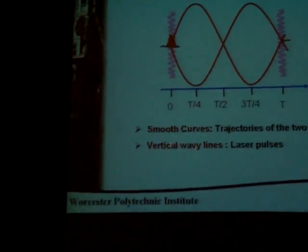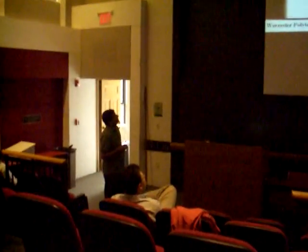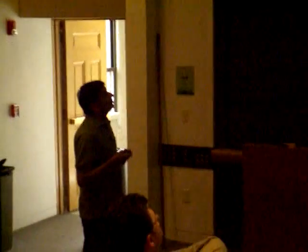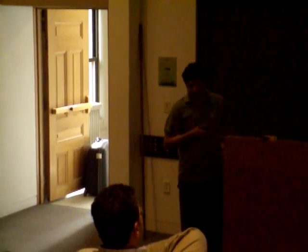At time T/4, which is a quarter of the time period, the two clouds reverse their direction. At time T/2 they pass each other, and again they return at three-quarters of the time period. Finally, they are recombined at time t equal to T at the end of the interferometric cycle. Since there is no reflecting pulse, this is what we are calling a pre-oscillation interferometer.